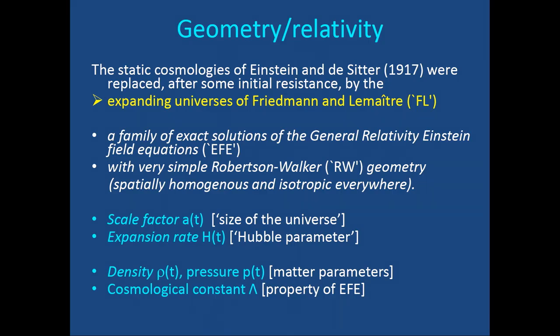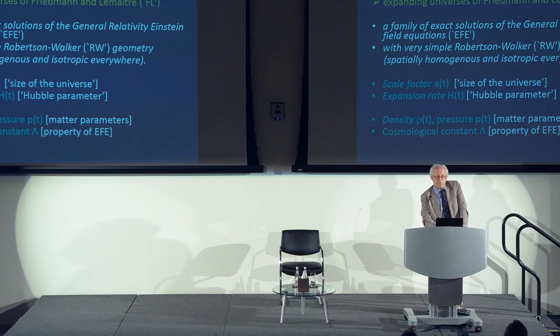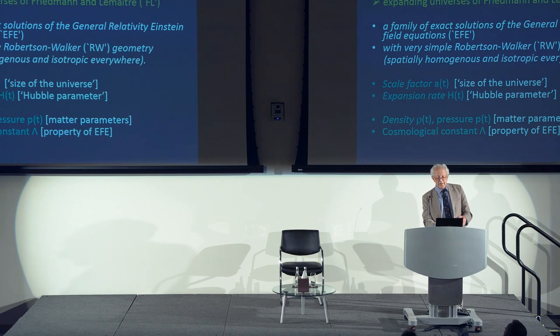The expanding universes of Friedmann-Lemaître are exact solutions of Einstein's field equations (EFE) with a simple Robertson-Walker geometry. These models are spatially homogeneous — the same everywhere at a given time — and isotropic, meaning there is no center, no preferred place, and no preferred direction in the sky at the scale of the cosmos. They are incredibly simple.